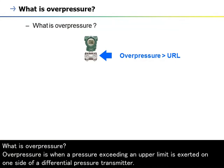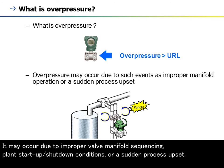What is overpressure? Overpressure is when a pressure exceeding an upper limit is exerted on one side of a differential pressure transmitter. It may occur due to improper valve manifold sequencing, planned start-up or shut-down conditions, or a sudden process upset.